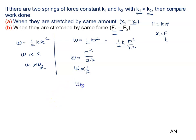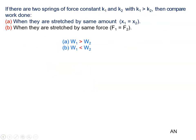Since k2 is less than k1, W2 is greater than W1. So the right answer of this problem is: part (a) W1 is greater than W2, and part (b) W1 is less than W2.